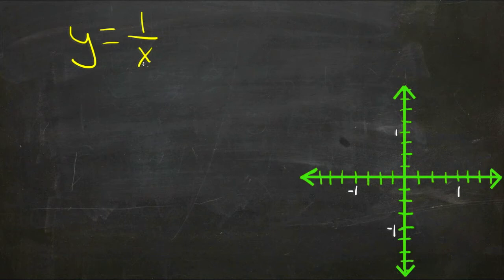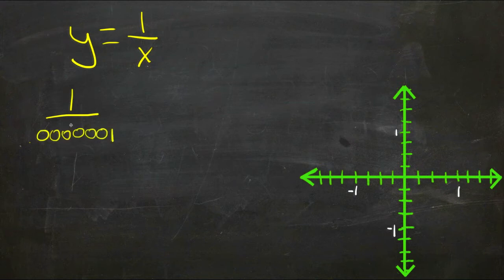We could take one and divide it by 0.0000001, an extremely tiny number—you know, tenths, hundreds, thousands, ten thousands, hundred thousands, millions, ten millionths. One ten-millionth. And if x is one divided by ten million, then y is going to be ten million.